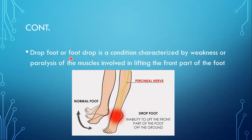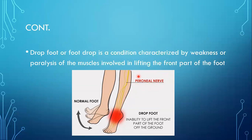An example application is drop foot, a condition characterized by weakness or paralysis of the muscles involved in lifting the front part of the foot. A person with drop foot cannot lift the front part of the foot off the ground, creating significant inconvenience. The nerve associated with this problem is the peroneal nerve, and the electrode should be placed close to it for a FES system to work.